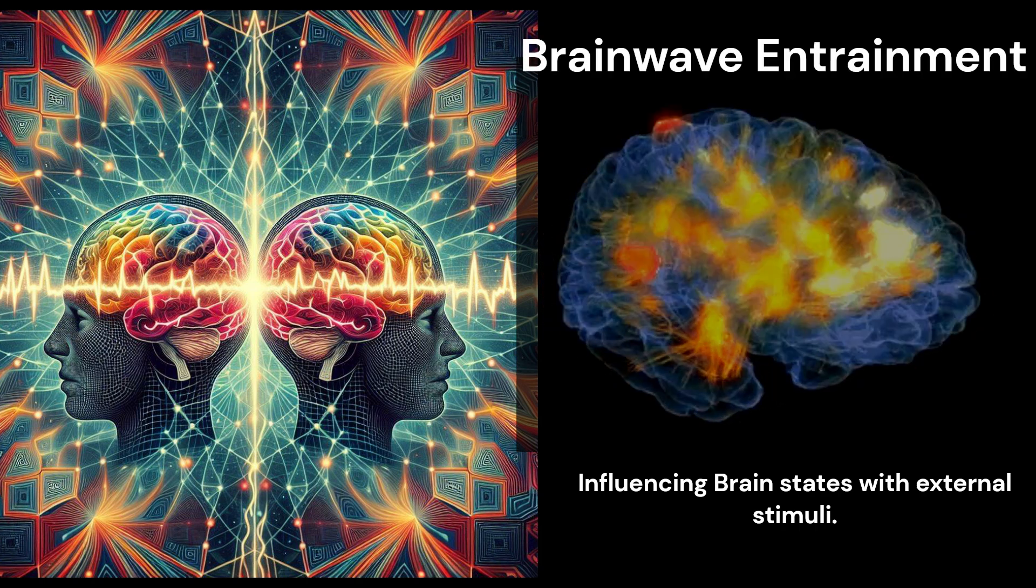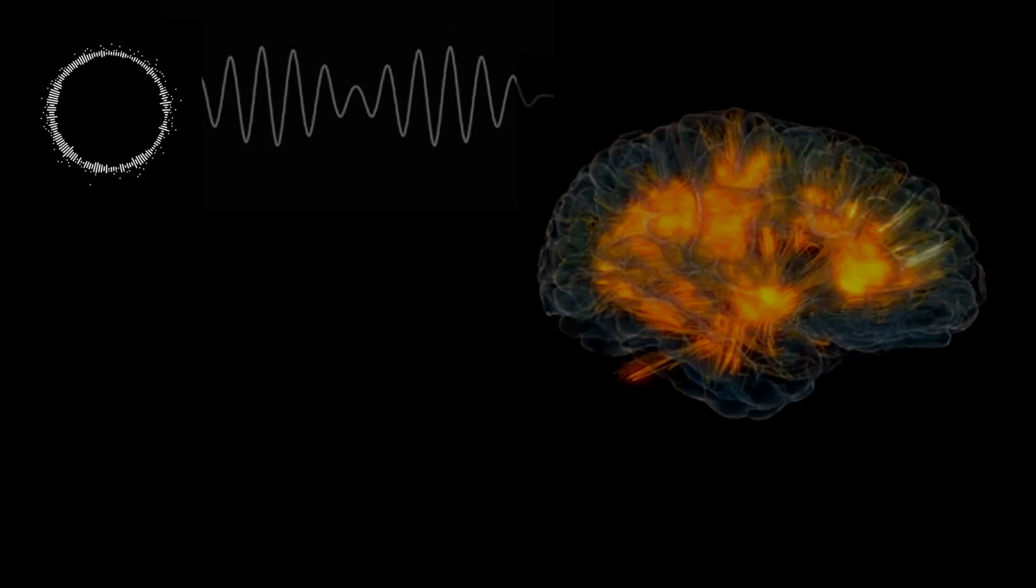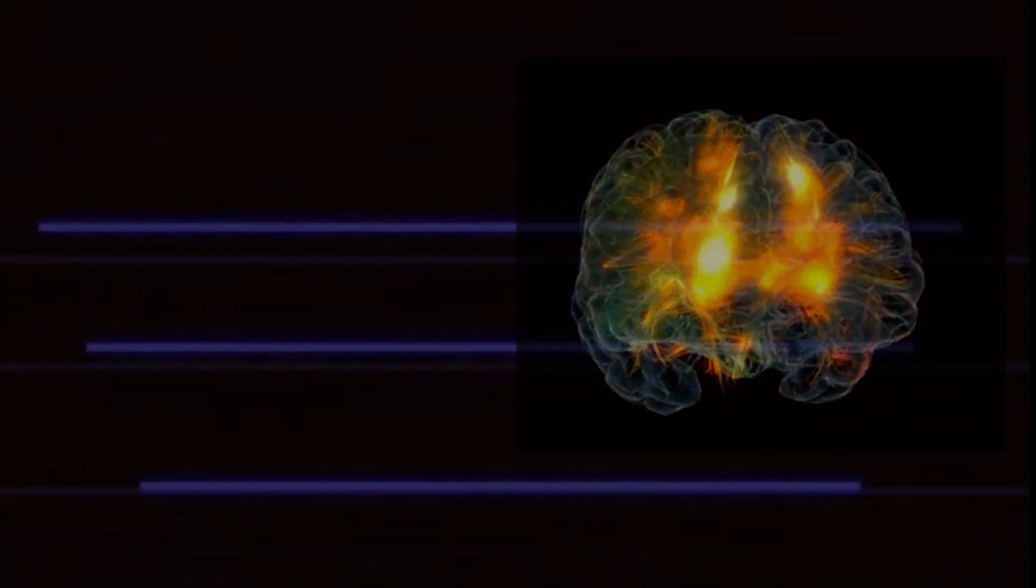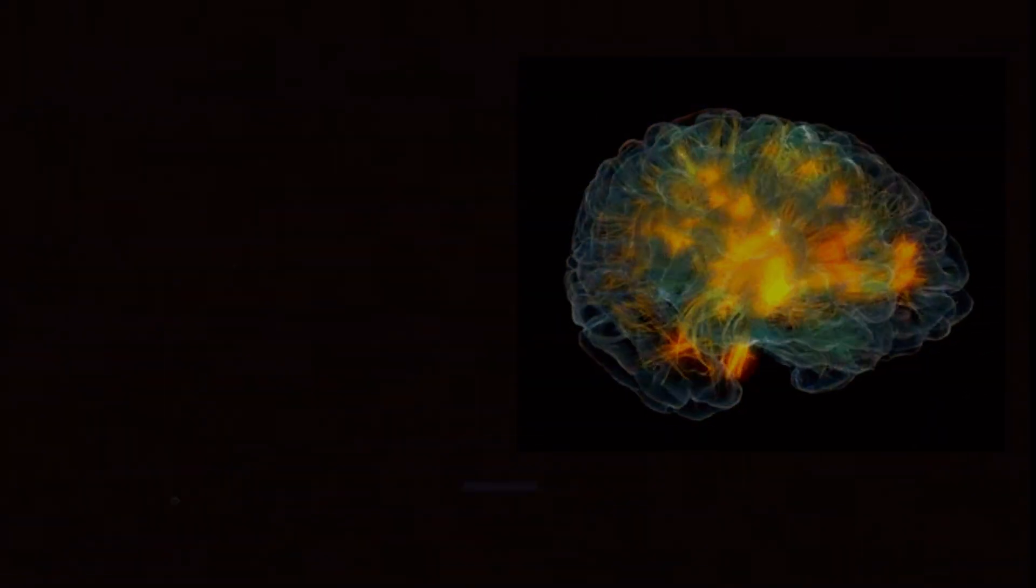Brainwave entrainment is a field of study that explores the impact of external stimuli, such as sound, light, and magnetic fields, on brain activity. It's based on the hypothesis that external rhythmic stimuli can synchronize and alter brainwave frequencies.